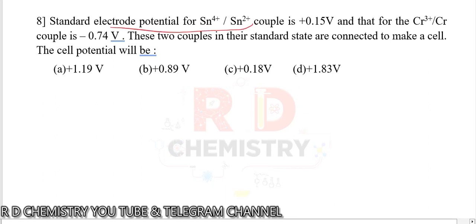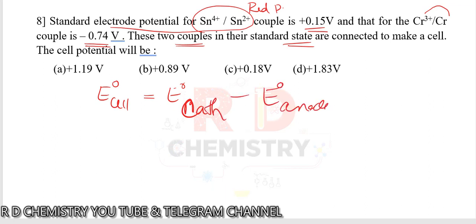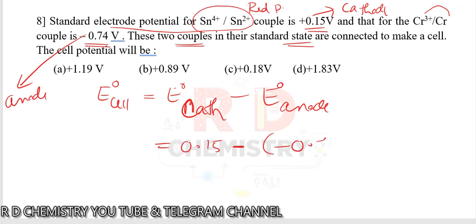Question 8. Standard electrode potential: Sn4+/Sn2+ reduction is +0.15 V, and Cr3+/Cr reduction is -0.74 V. The two couples are connected to form a cell. E-naught cell equals E-naught cathode minus E-naught anode. The higher value (+0.15) is cathode and the lower value (-0.74) is anode. Therefore E-naught cell equals 0.15 minus (-0.74) equals 0.89 volts. The answer is option B.